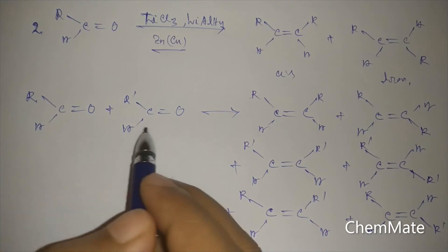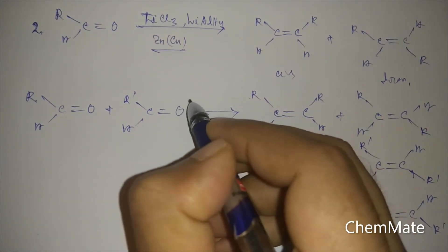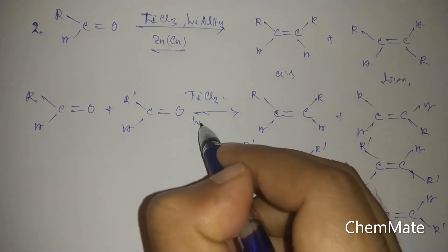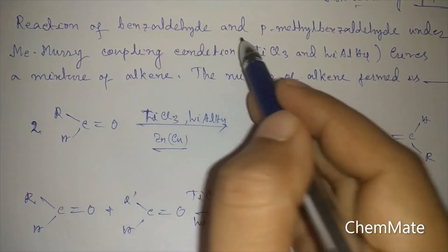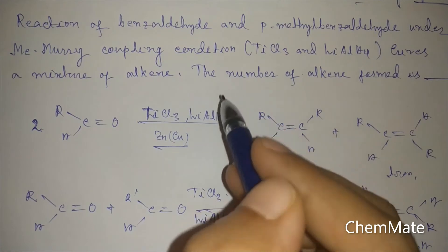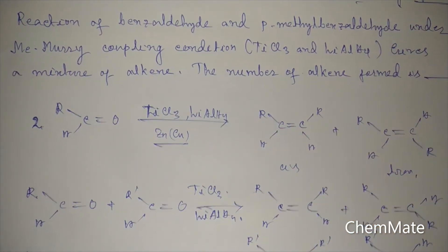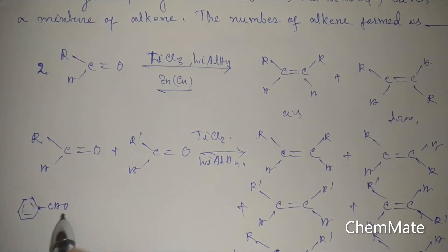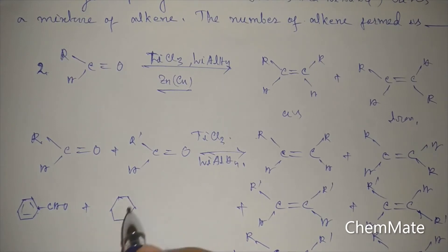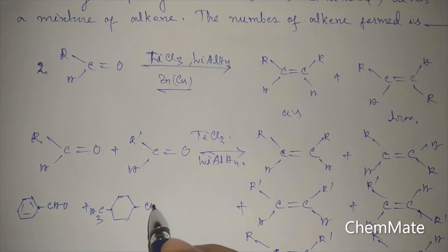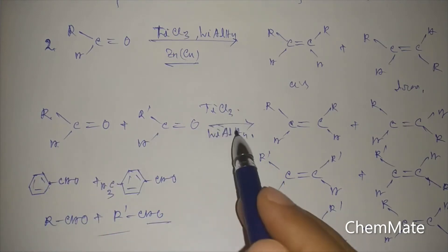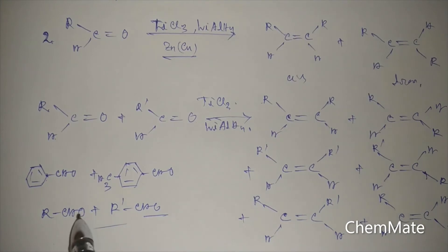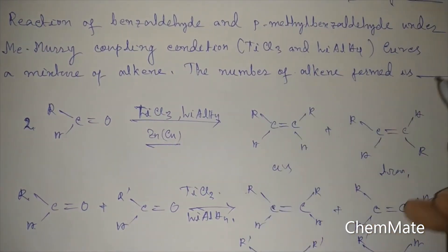When two different types of aldehydes participate in the McMurry reaction with TiCl3 and LiAlH4, we get six products. Since benzaldehyde is RCHO and para-methyl benzaldehyde is R'CHO, when these participate in McMurry coupling, the number of alkenes formed will be six.